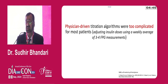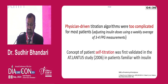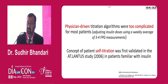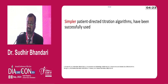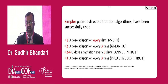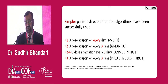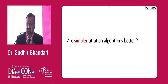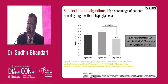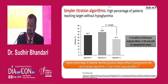Physician-driven titration algorithms are sometimes very complicated for most patients. Adjusting insulin doses using a weekly average of 3 to 4 fasting plasma glucose results — patient self-titration was first validated in the LANMET study in 2006 in patients familiar with insulin. Simpler patient-directed titration algorithms have been successfully used: 1-unit dose adaptation every day, 2-unit dose adaptation every third day, 2–4 units every 3 days, or 3-unit adaptation every 3 days. A higher percentage of patients reached glycemic target without hypoglycemia with use of a simple algorithm.